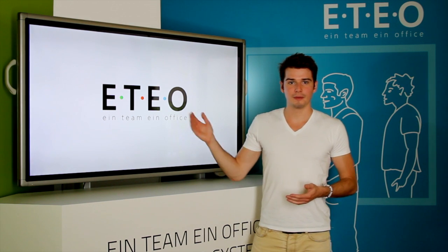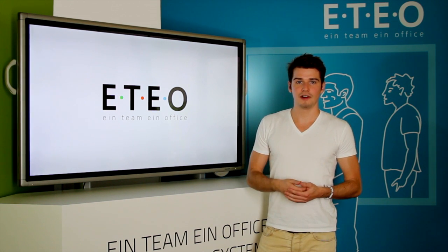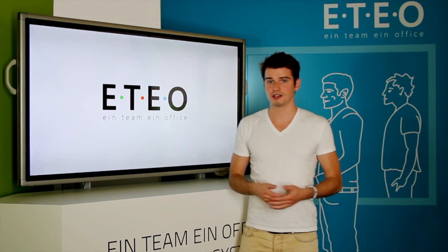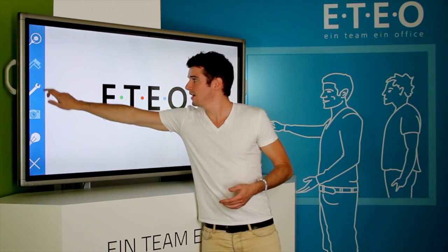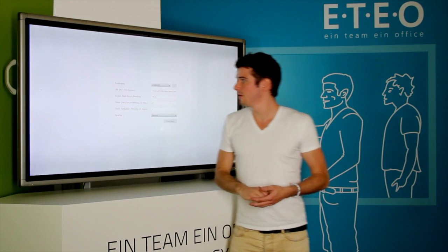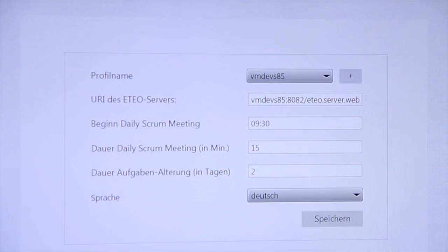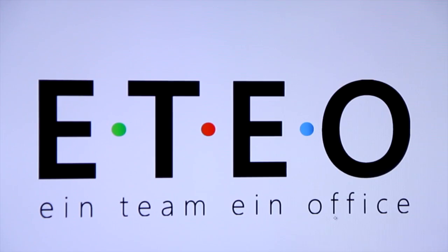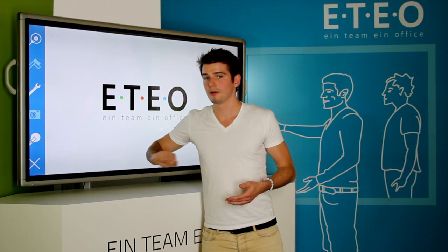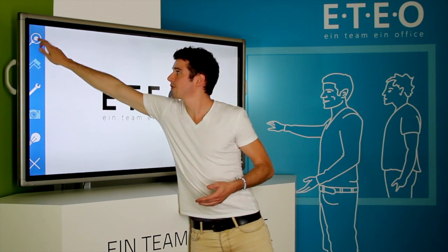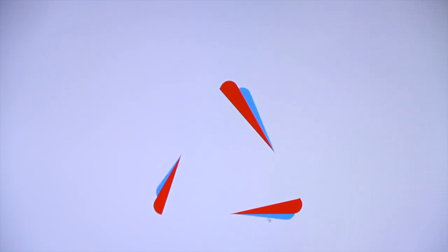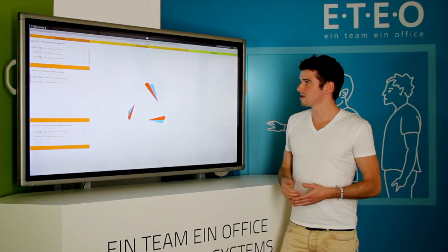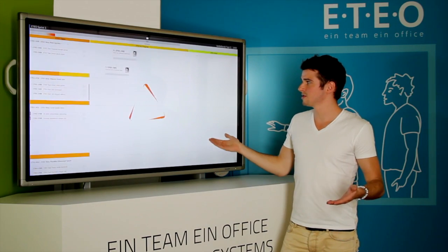I will now connect to our external task management system Atlassian Jira. I do this by opening the main menu, where I open the settings and select the appropriate server profile. Then I reopen the main menu and connect to the server. I now have the sprint selection before me, and after selecting a sprint, our server loads the data from the third-party server.